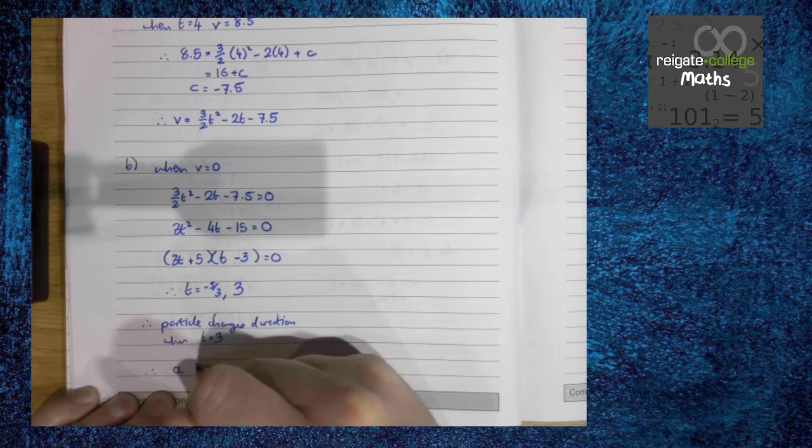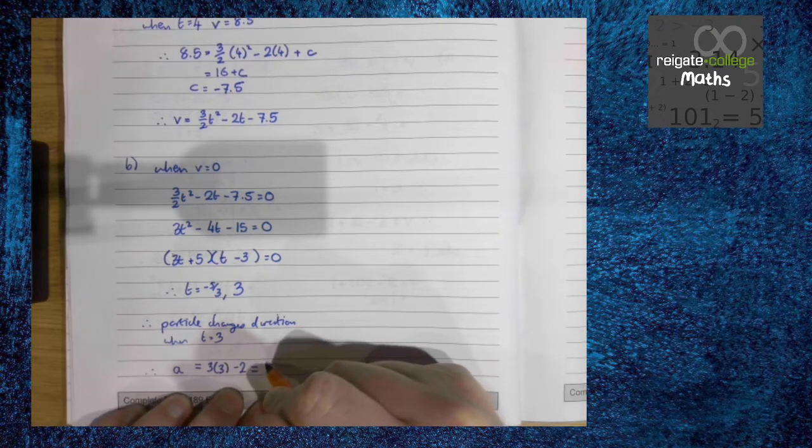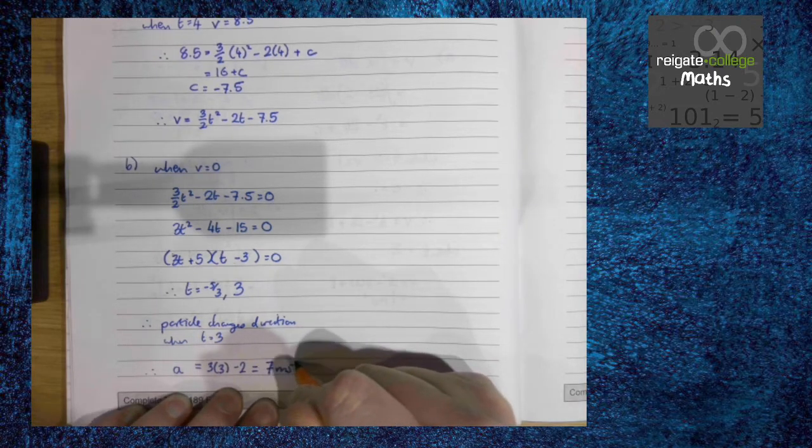Therefore, acceleration is 3 times 3 minus 2, which is 7 meters per second squared.